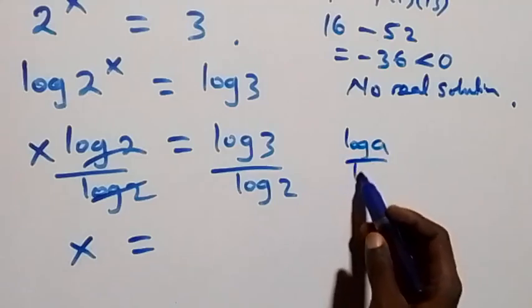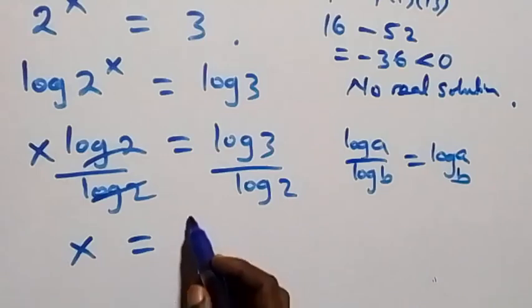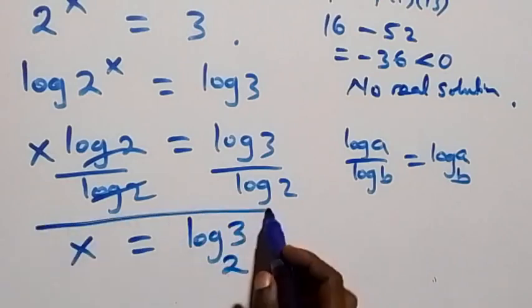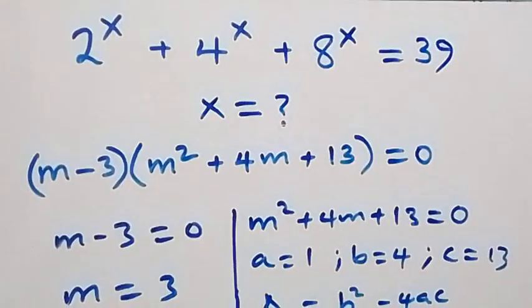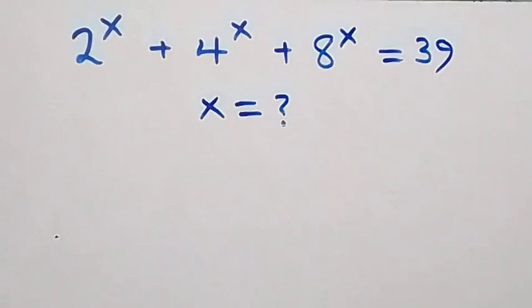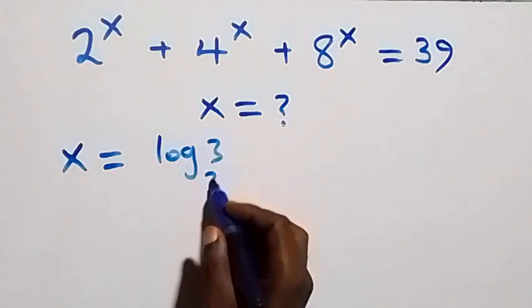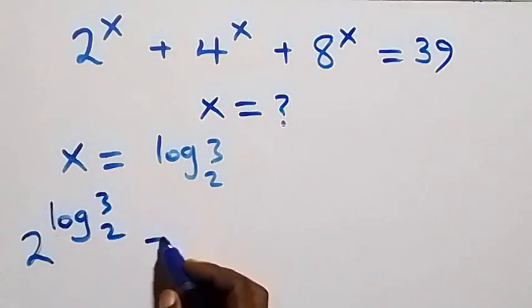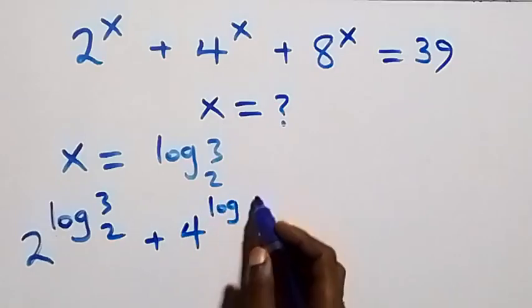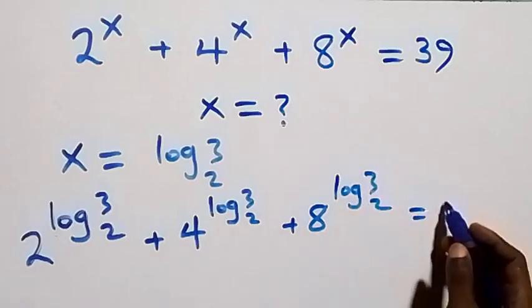Using the change of base rule — log a over log b equals log a to base b — we have x equals log 3 to base 2. This is the value of x. To verify, we substitute x equals log 3 to base 2 into the original equation: 2 raised to power log 3 base 2, plus 4 raised to power log 3 base 2, plus 8 raised to power log 3 base 2, should equal 39.